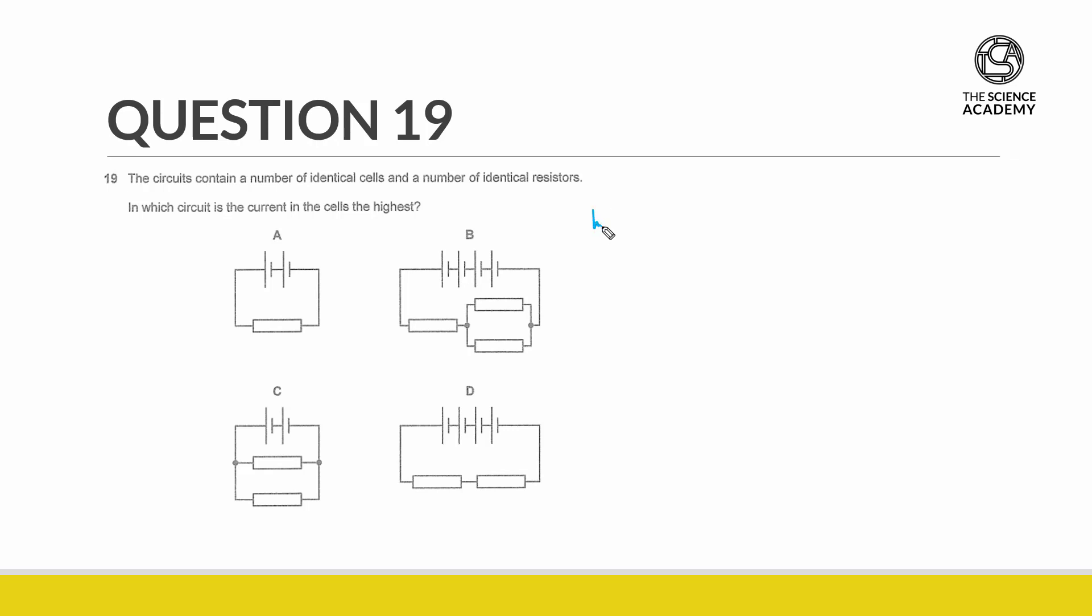So in order to have highest current, we need to have lowest resistance. Looking through the circuits, the quickest way is to look for the circuit that has only parallel arrangement because parallel circuits will always give us a total resistance that's less than any other configuration.